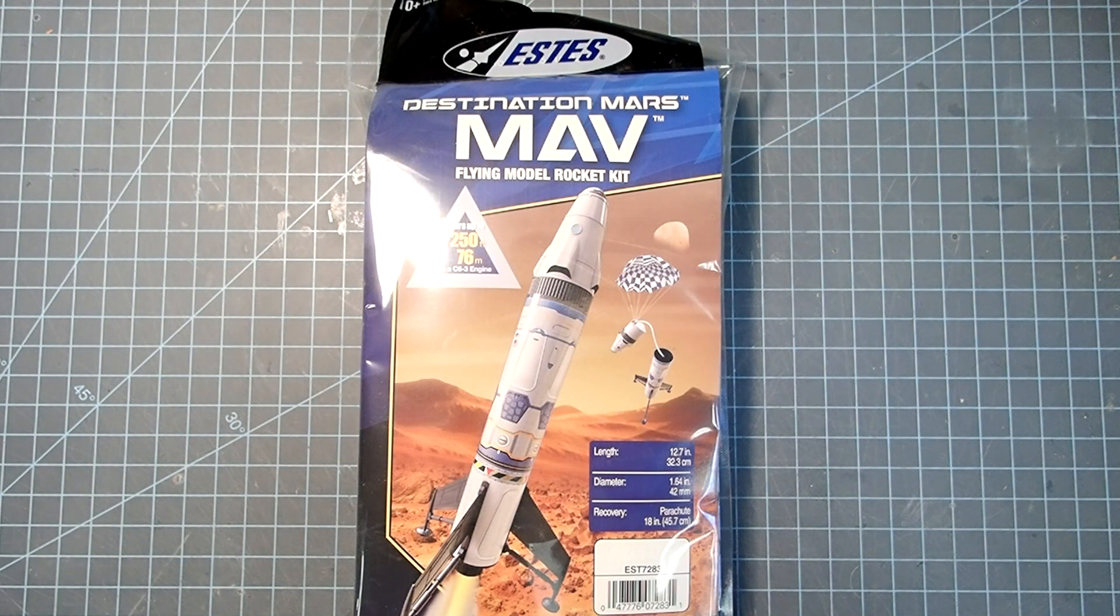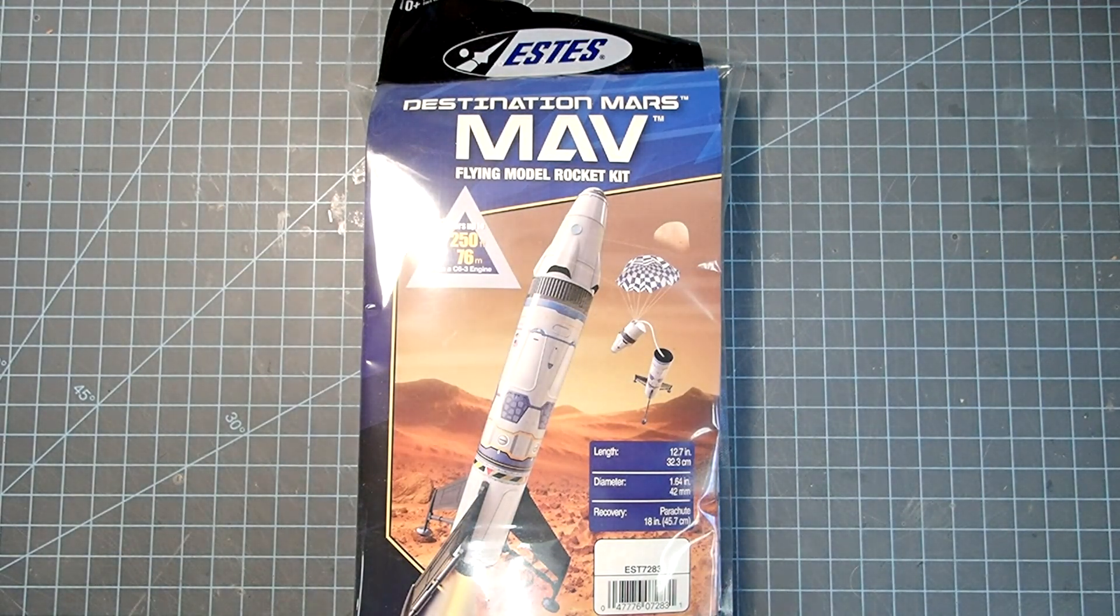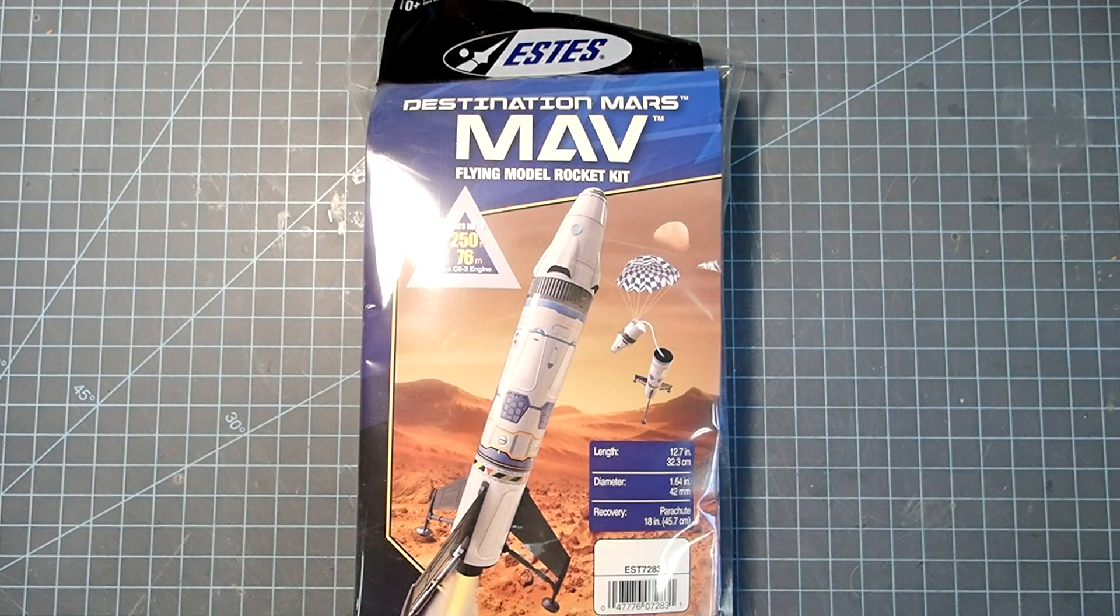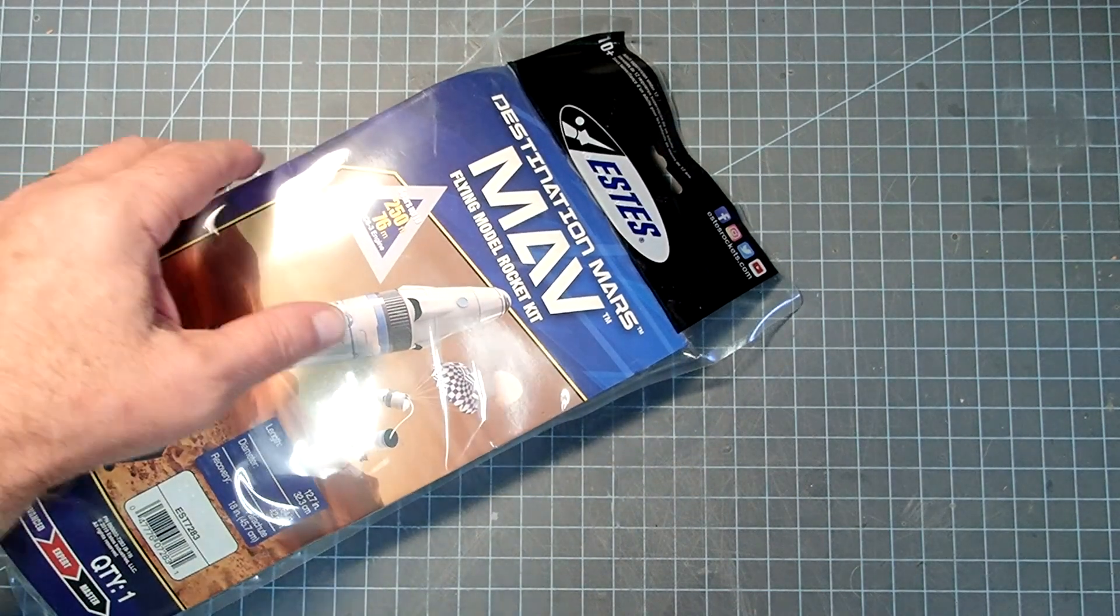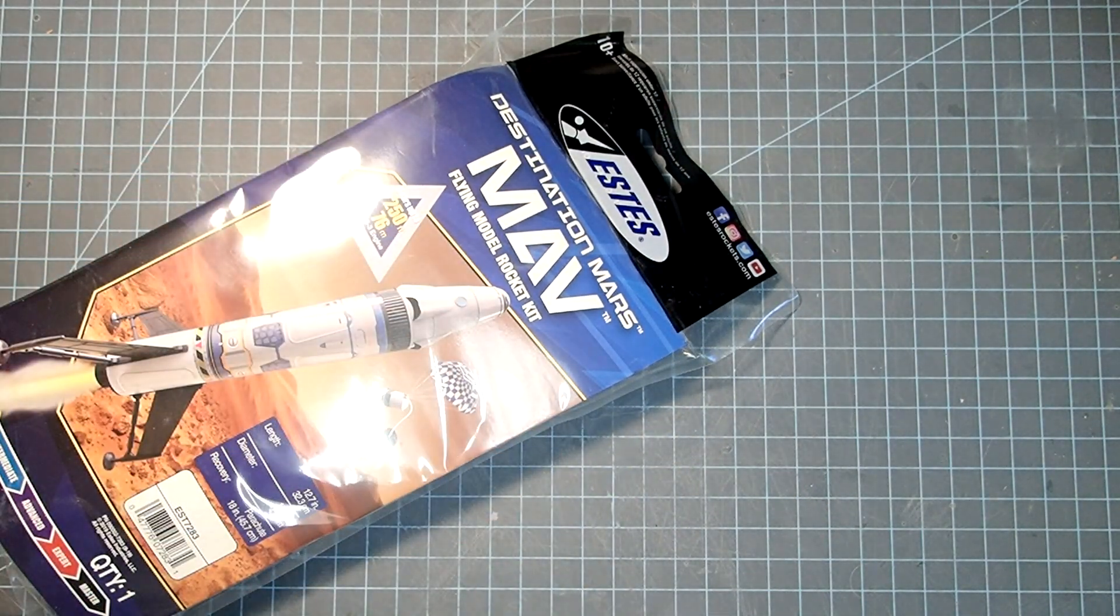Hello everyone, I'm Dave Thomas and today I am building the MAV, the Mars Ascent Vehicle from Estes Rockets. This is a beginner's kit that will go together in less than an hour, generally speaking.